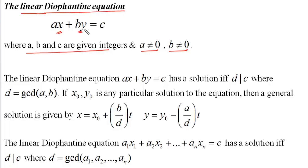Before solving this equation we need to determine whether it is solvable in integers or not. For this linear equation we will find GCD of a and b, and suppose that GCD is d. Now if d divides c then this equation will have a solution, and if d doesn't divide c then this equation will not have a solution. So all we need to do is take the GCD of a and b and check if it divides c.